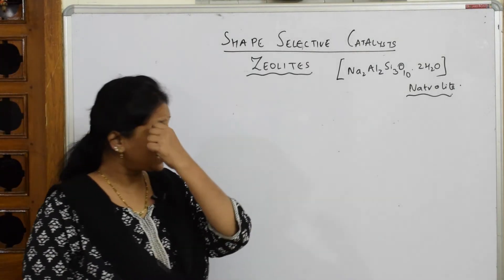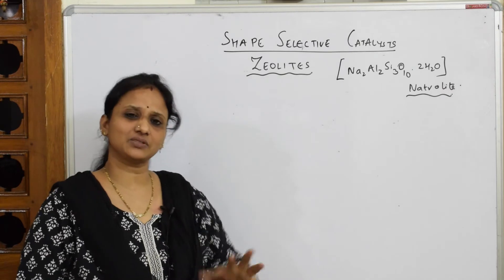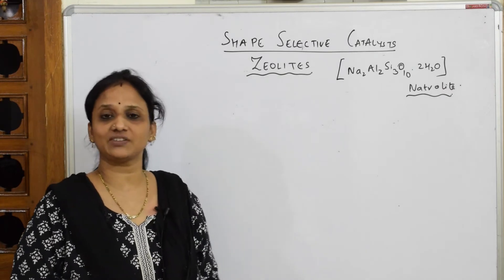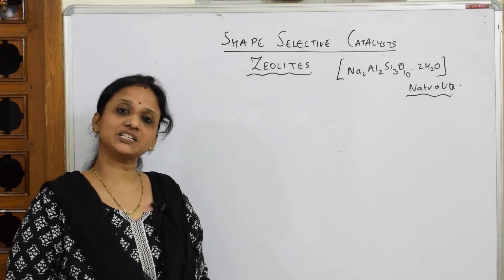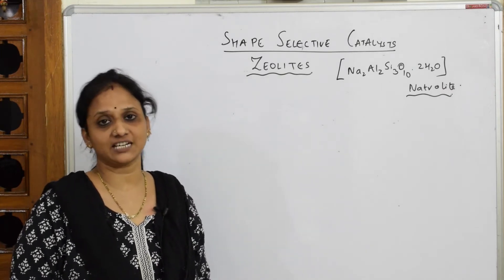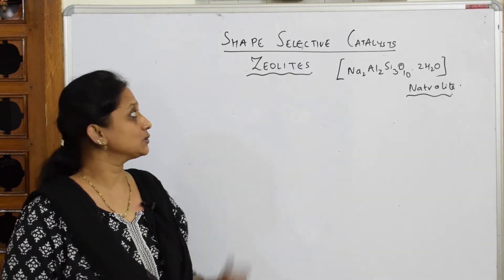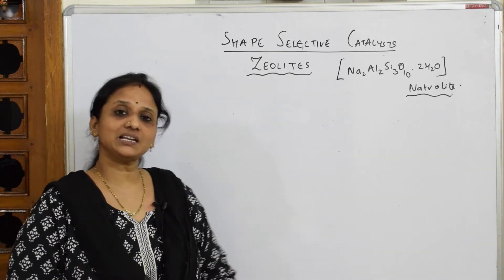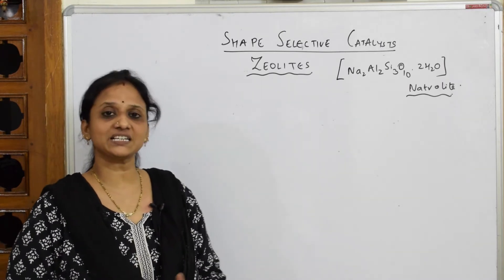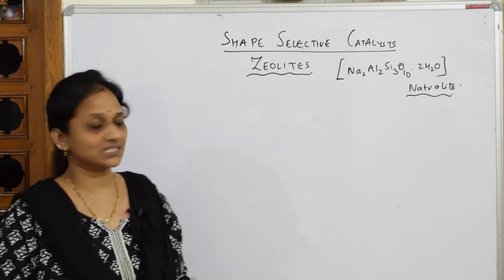This is a separate topic — a short note on shape-selective catalysts, which is a very important topic. Shape-selective catalysts are called zeolites.